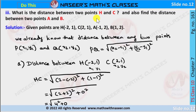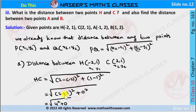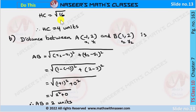Now we find the distance between two points H and C. H coordinates are (−2, 1) and C coordinates are (2, 1). The distance formula between two points P(x₁, y₁) and Q(x₂, y₂) is PQ = √((x₂ − x₁)² + (y₂ − y₁)²). Taking H as (x₁, y₁) = (−2, 1) and C as (x₂, y₂) = (2, 1): HC = √((2 − (−2))² + (1 − 1)²) = √((4)² + 0) = √16 = 4 units.